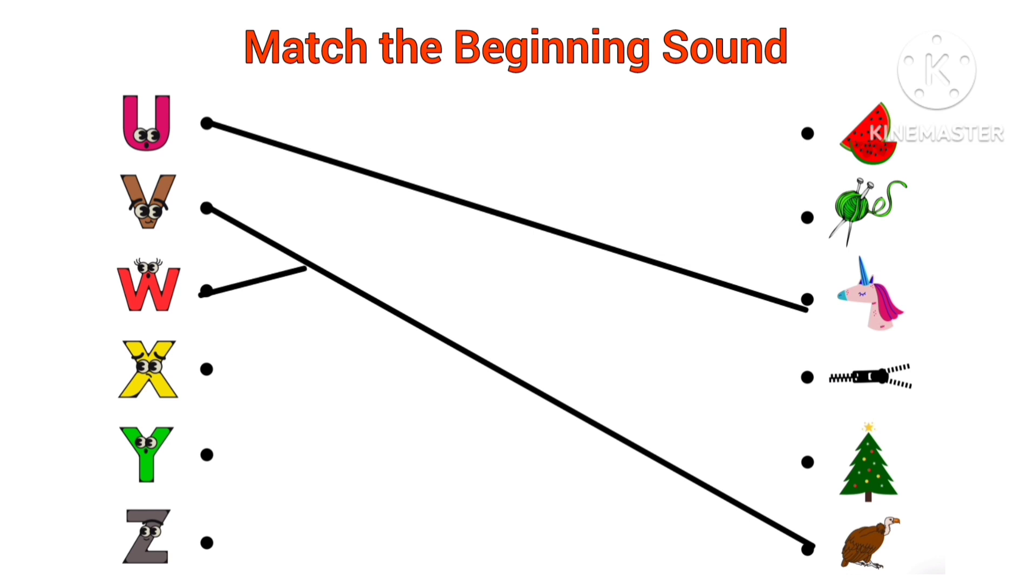W, W for watermelon. Beginning sound of watermelon is W. X, X for X-mas. Beginning sound of X-mas is X.